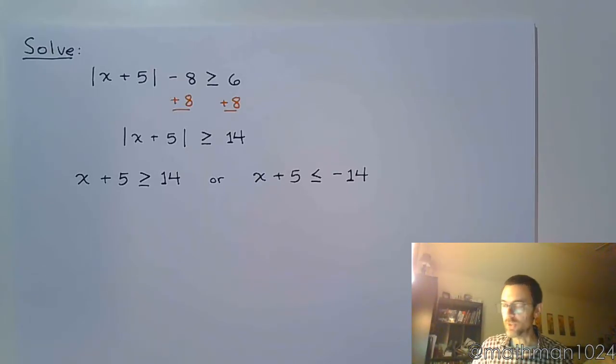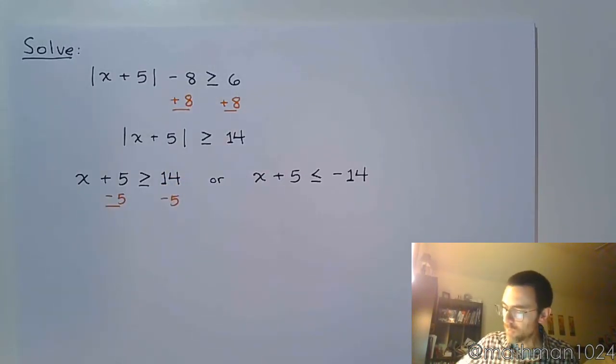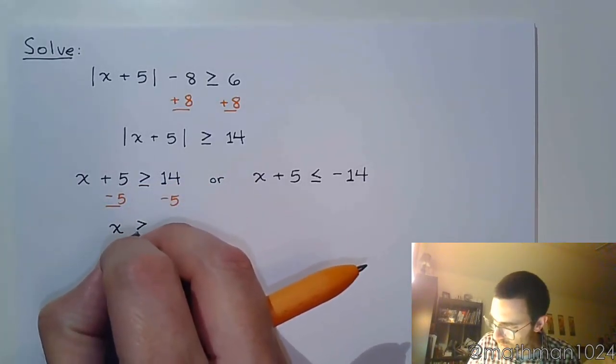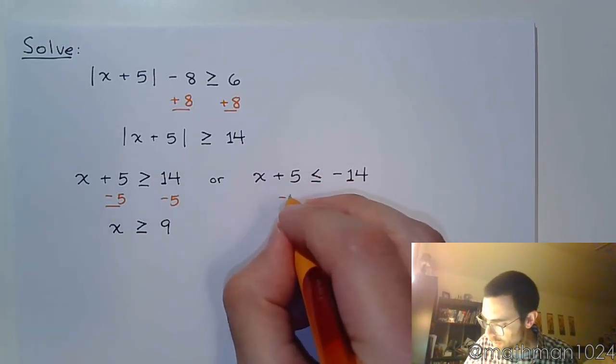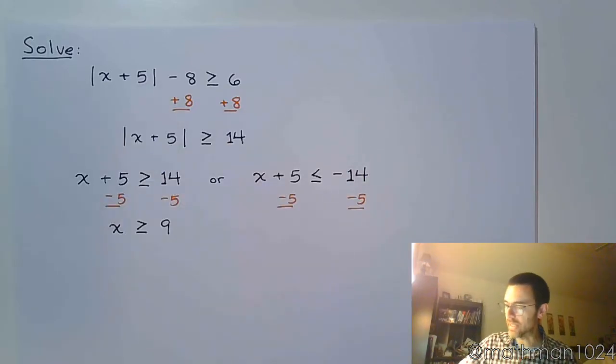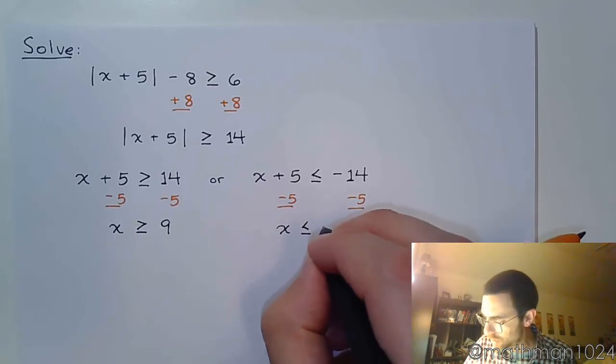Now we take each of these inequalities and we solve them. Subtract 5 on both sides, x is greater than or equal to 9. Over here subtract 5 on both sides again, x is less than or equal to negative 19.